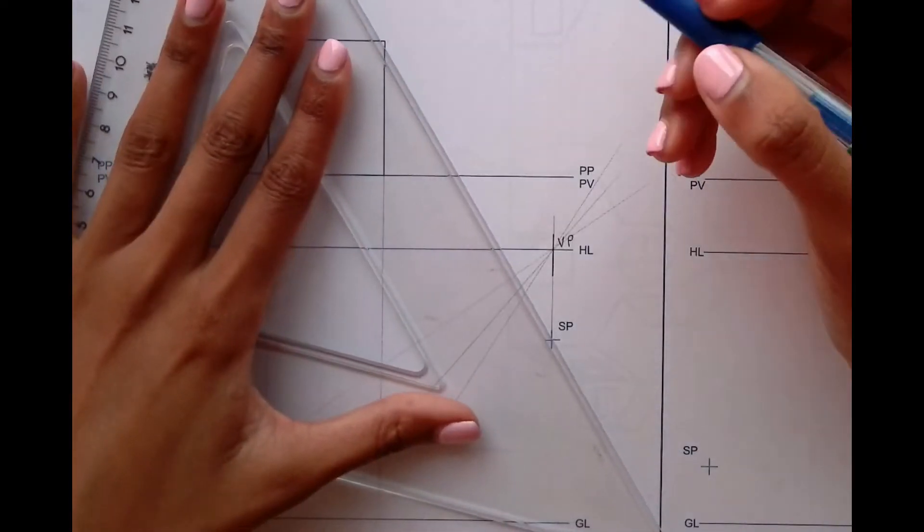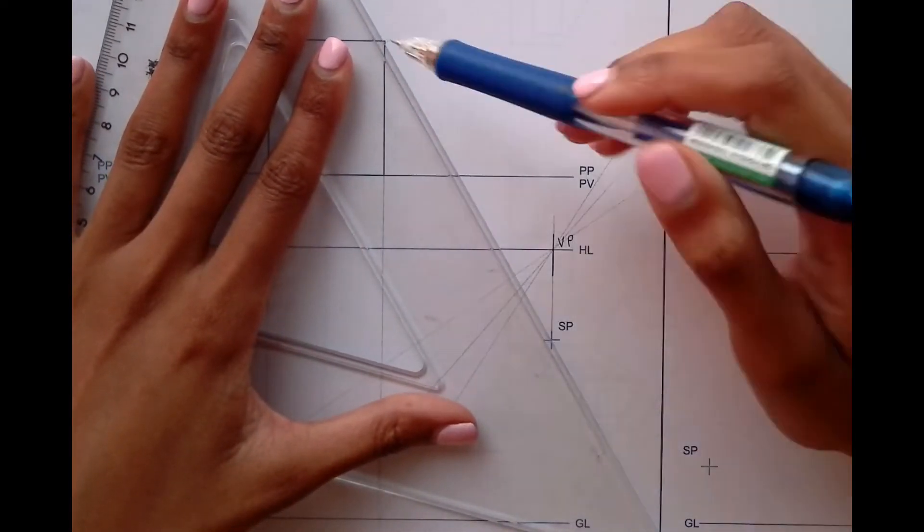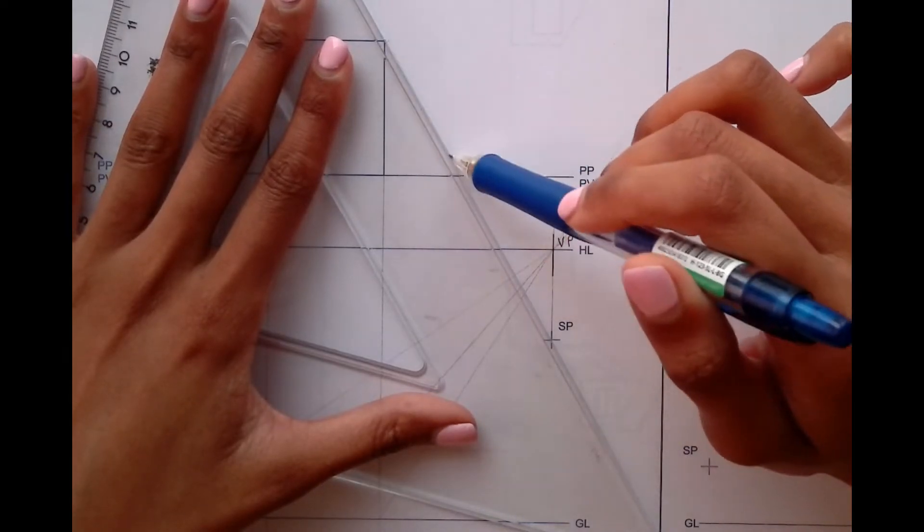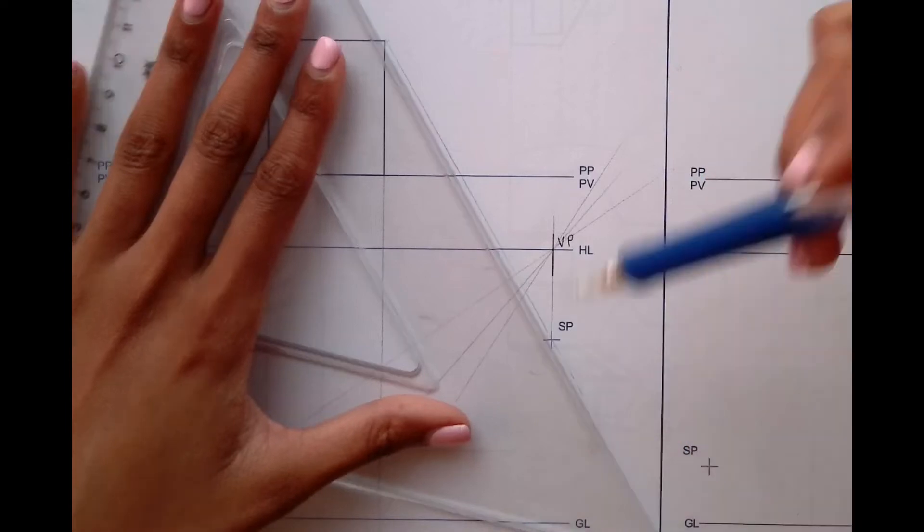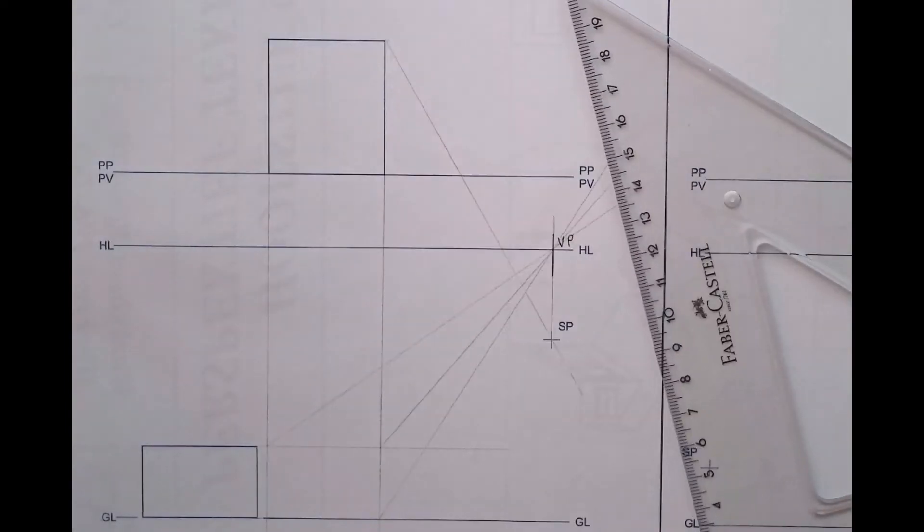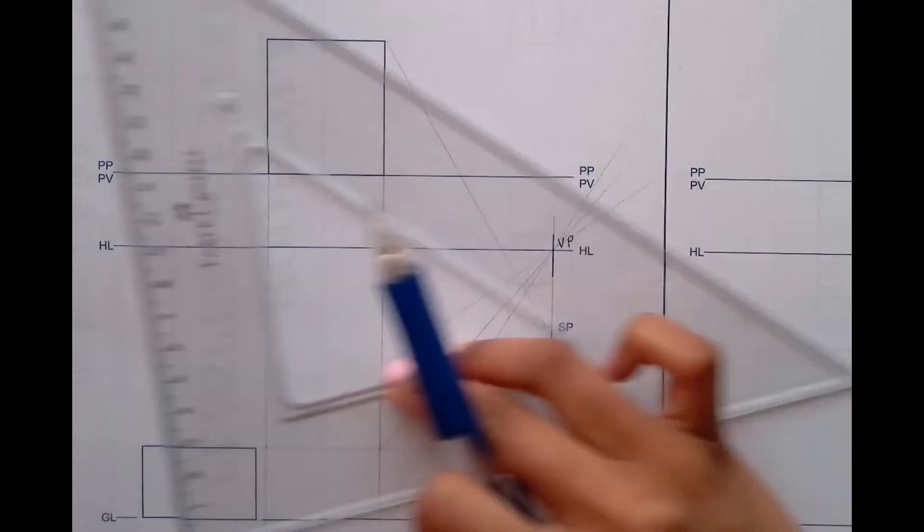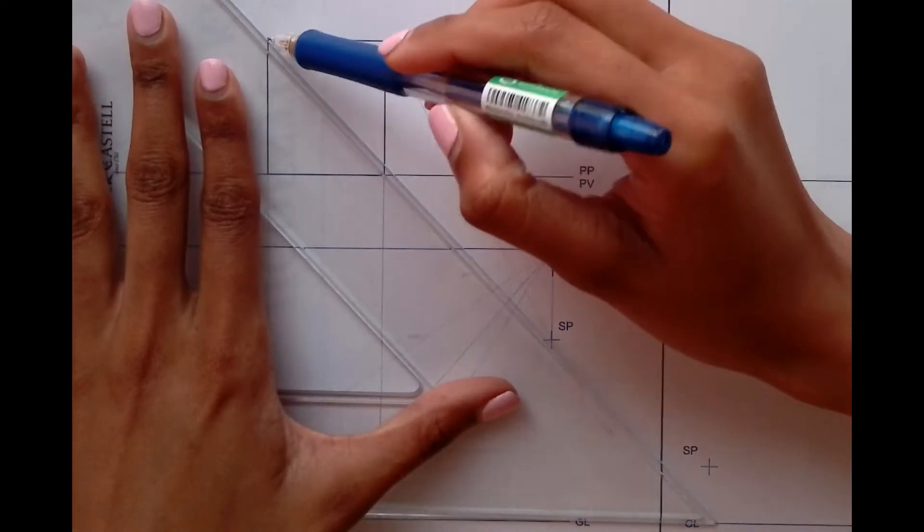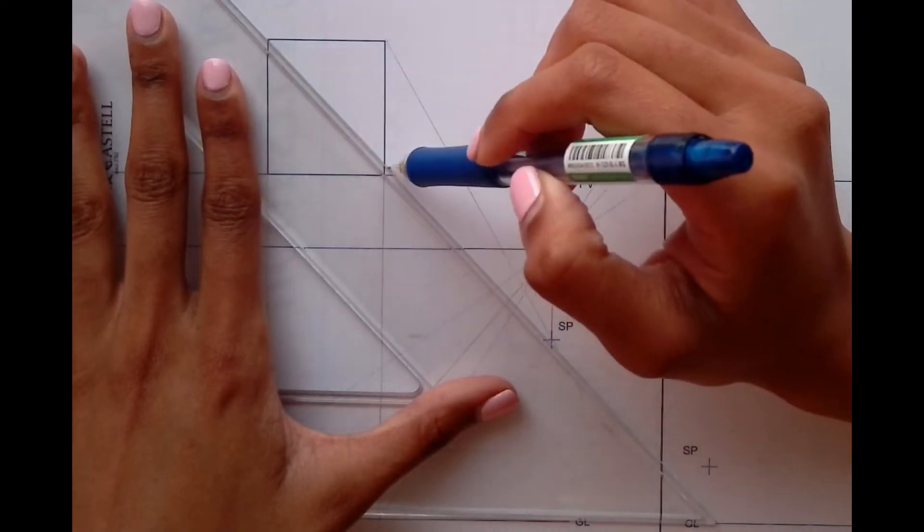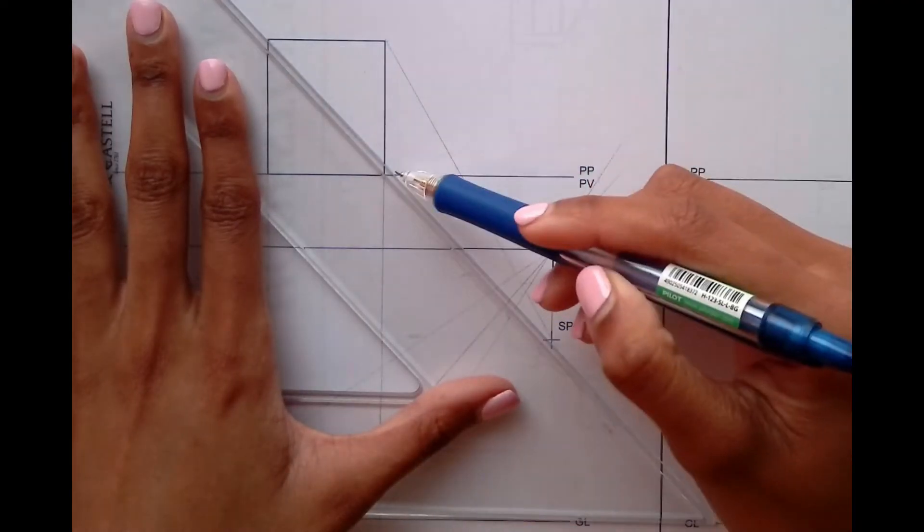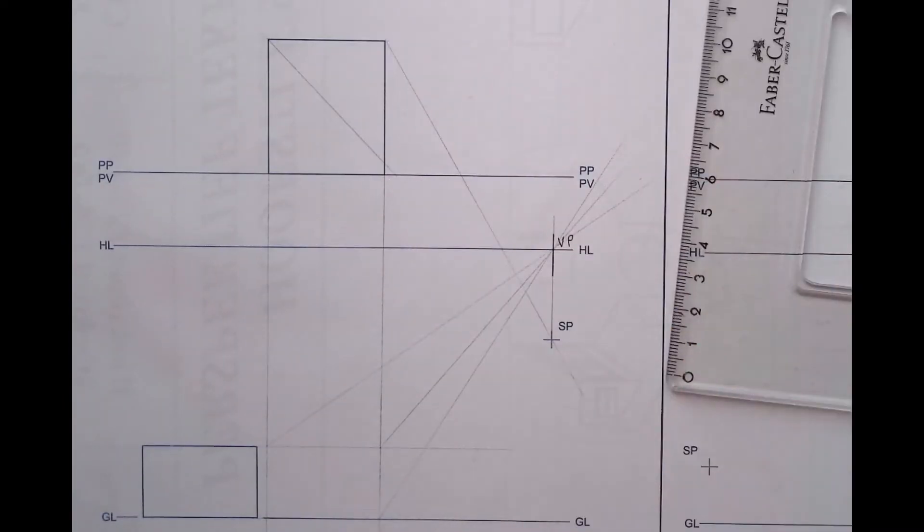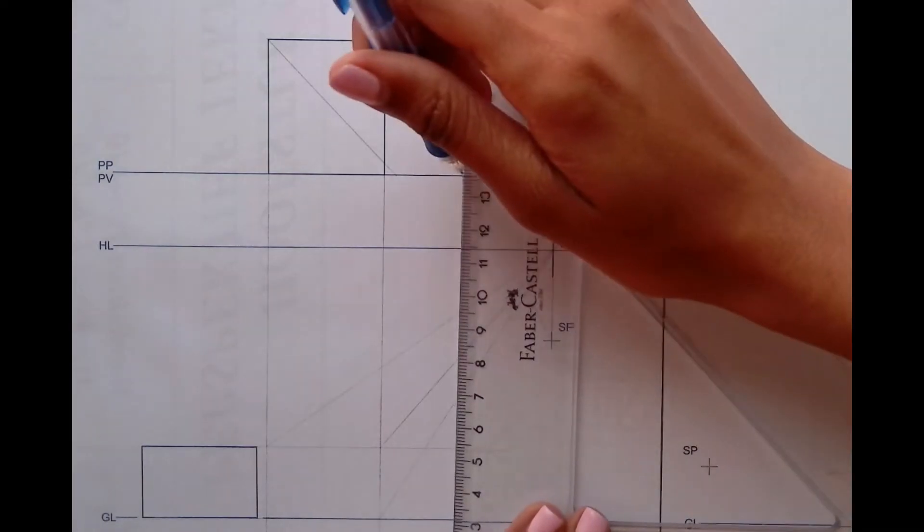I'm going to take this point all the way to the stationary point like that. With the second one, I can just align it. You basically just align it like that, and once it intersects with the picture plane, you stop to avoid having too many lines. Then I'm going to bring this point down.